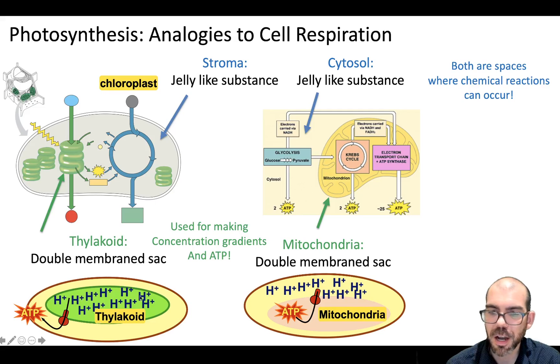In the case of the thylakoid, we're building a concentration gradient inside the thylakoid, and it's diffusing out into the stroma. With the mitochondria that is reversed. We're pumping hydrogen concentrations up into that inner membrane space, and then diffusing them back into the matrix. Similar structures here, and similar functions.